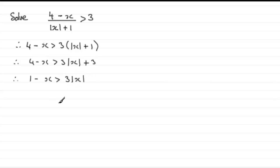And at this point I've got two functions of x where I could sketch the graphs quite easily. The graph of y equals 1 minus x and the graph of y equals 3 times the mod of x.